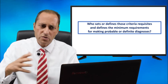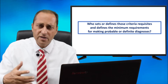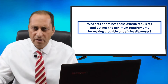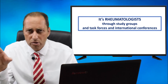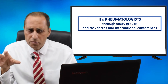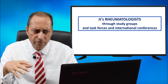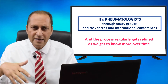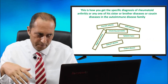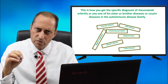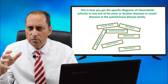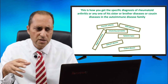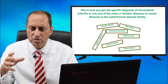Who sets or defines those criteria and the minimum requirements for making probable or definite diagnoses? It's rheumatologists — through study groups, task forces, and international conferences — and the process regularly gets refined as we learn more over time. This is how you get the specific diagnosis of rheumatoid arthritis or any of its sister, brother, or cousin diagnoses in the autoimmune disease family.